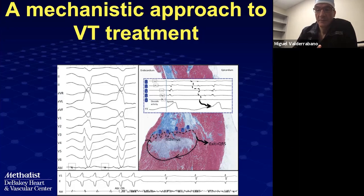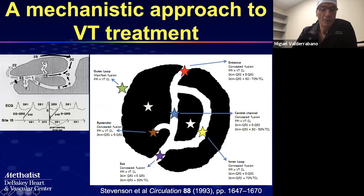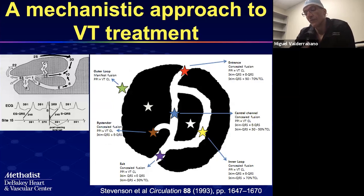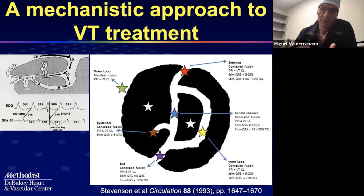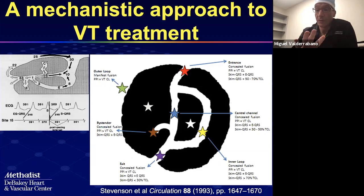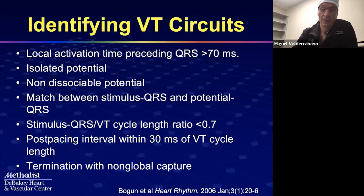What we look for in a patient with VT are signals in diastole, because those indicate we may be in the isthmus. The architecture of a scar is complex — you may have excitable tissue with multiple paths, and diastolic signals everywhere. Not all are part of the tachycardia circuit. There are different techniques to determine whether you are in a critical component of the tachycardia circuit, including identifying blind loops, central isthmus, or inner loops. The goal is to ablate areas within the scar that harbor diastolic signals.